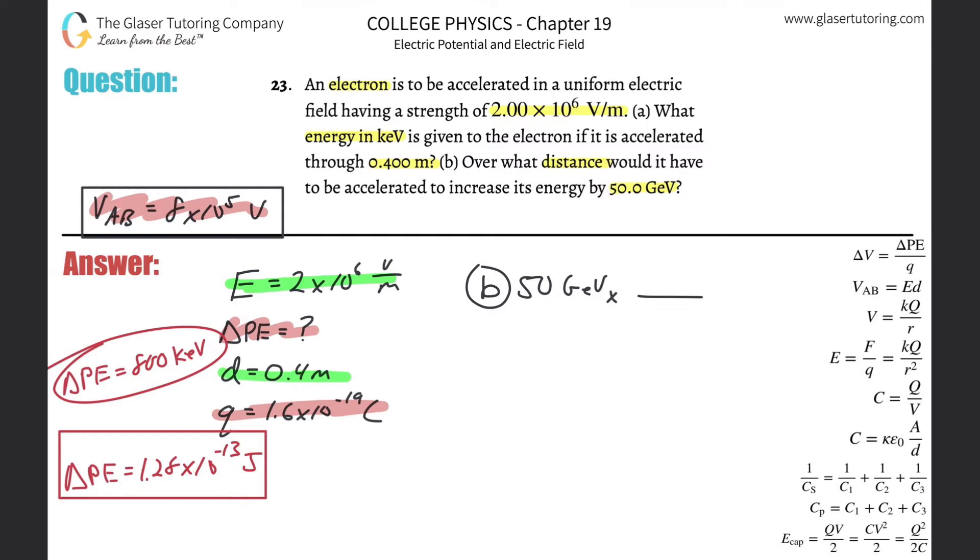Now giga is 10 to the ninth. Giga electron volt on the bottom, electron volt on the top. There's going to be basically 10 to the ninth electron volts for every one giga. So we'll see you later. Then remember the electron volt to joule, for every single electron volt is 1.6 times 10 to the minus 19th joules. And what do we have? So we get 50 multiplied by 10 raised to the ninth times 1.6 times 10 to the minus 19th. And we get about now 8 times 10 to the minus ninth. And that's going to be in terms of joules.